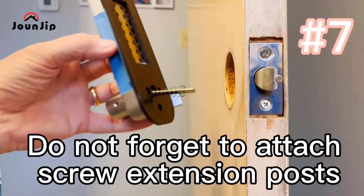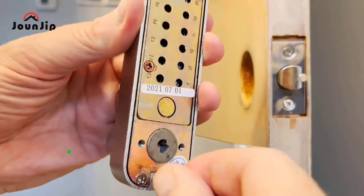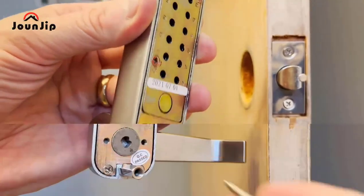Number seven: do not forget to attach screw extension posts to the top and bottom of the primary keypad.